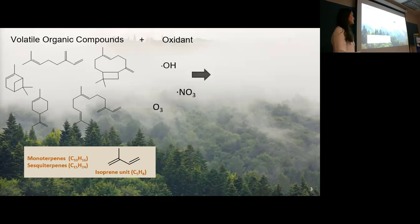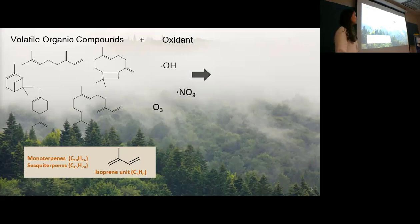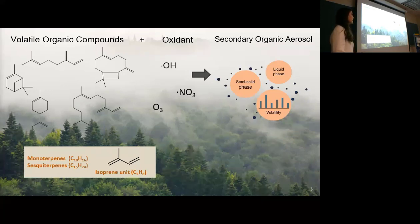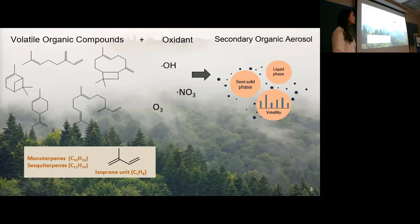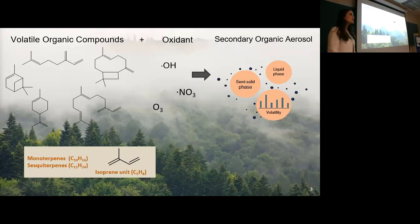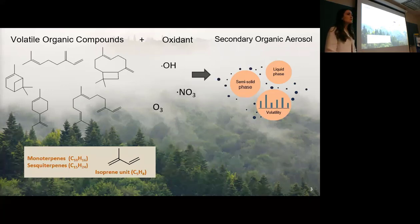When terpenes react with these oxidants, they form low-volatility species, such as semi-volatile species that can condense and partition into the particle phase. We call these particles secondary organic aerosols because they're formed secondarily in the atmosphere. Depending on what VOCs and mixtures they're formed from, they can have drastically different physical properties — ranging in phase states from liquid-like to semi-solid all the way to glassy. These SOA particles have thousands of different compounds inside them with a range of volatilities.